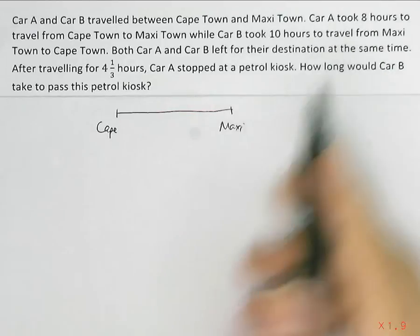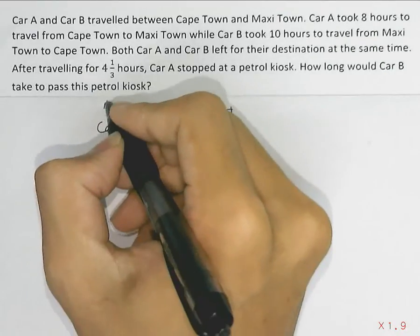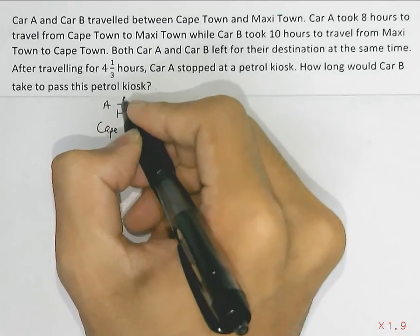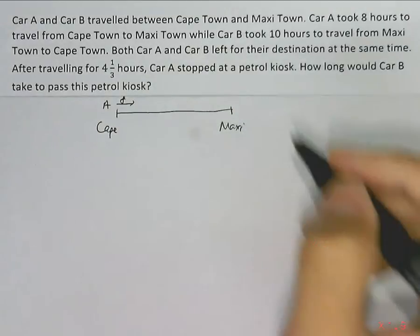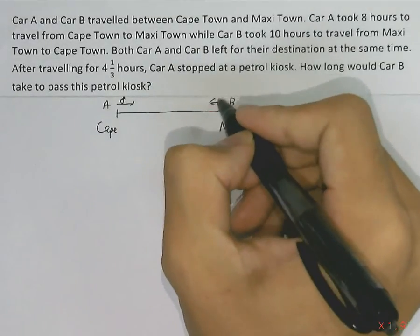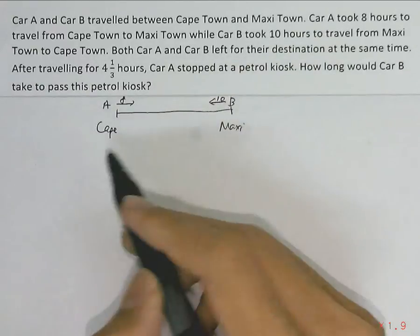Car A takes 8 hours to travel from Cape Town to Maxi Town, so car A takes 8 hours. And car B takes 10 hours to travel from Maxi Town to Cape Town.